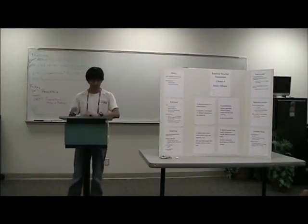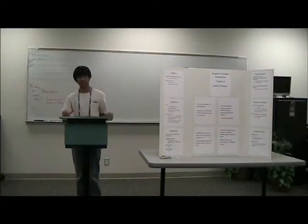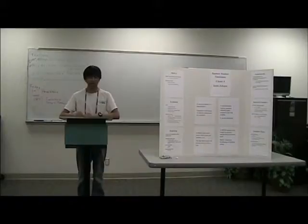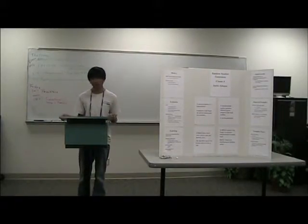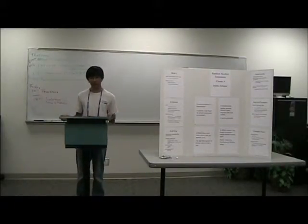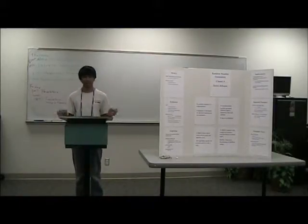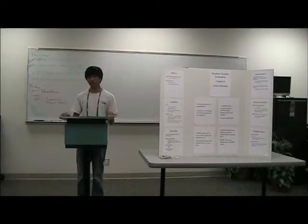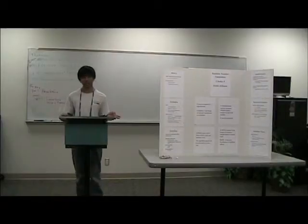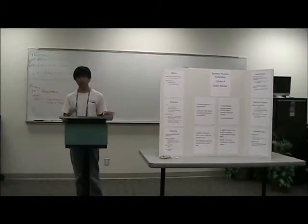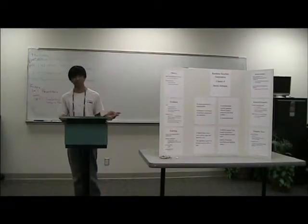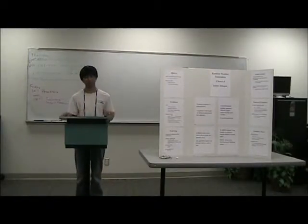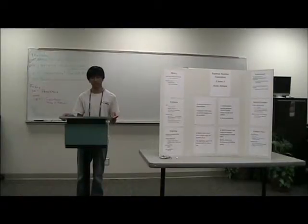Now we can look at a couple of examples of pseudorandom number generators. One is called the linear congruential generator, and it's based on a mathematical concept called linear congruence. Basically, every number is the last number times a variable called a, plus another variable called b, modulo m. All those variables are chosen by the programmer so that the numbers generated meet certain specifications.